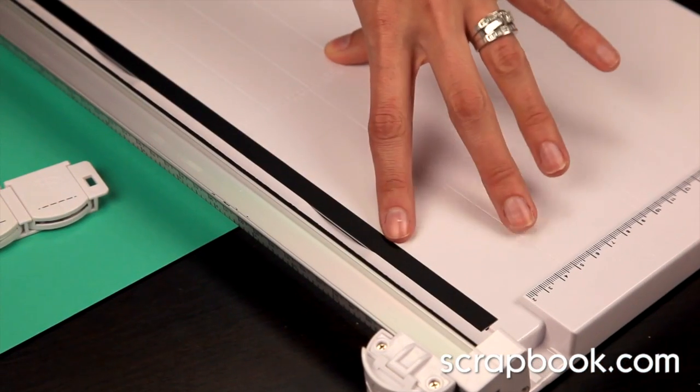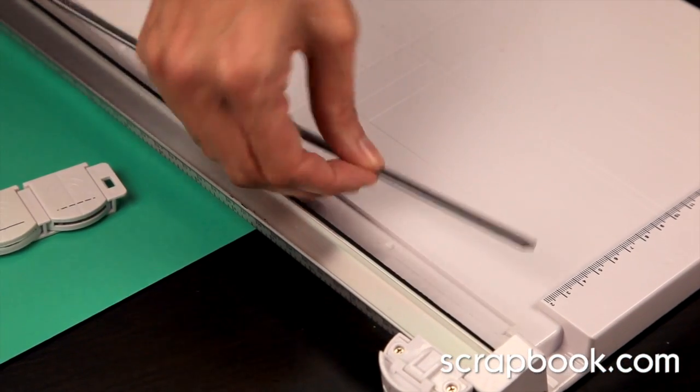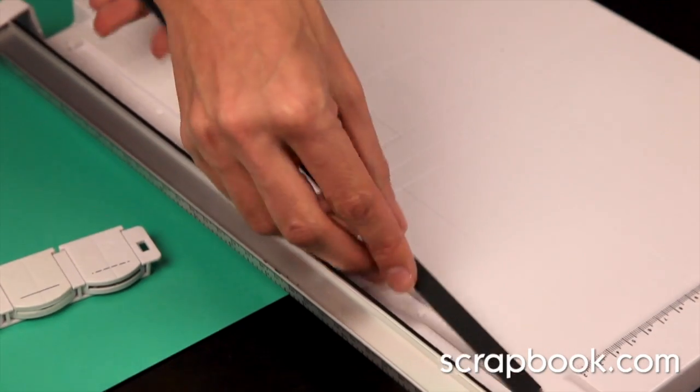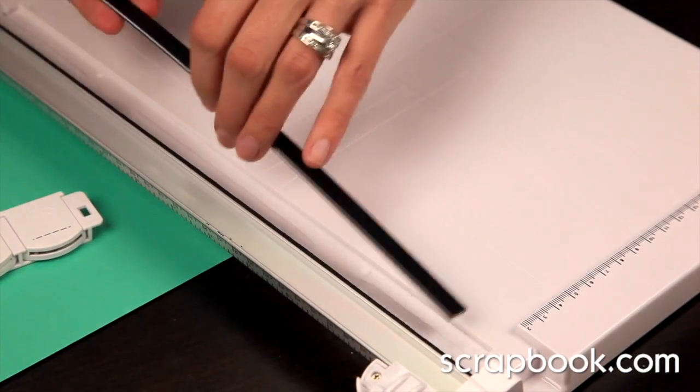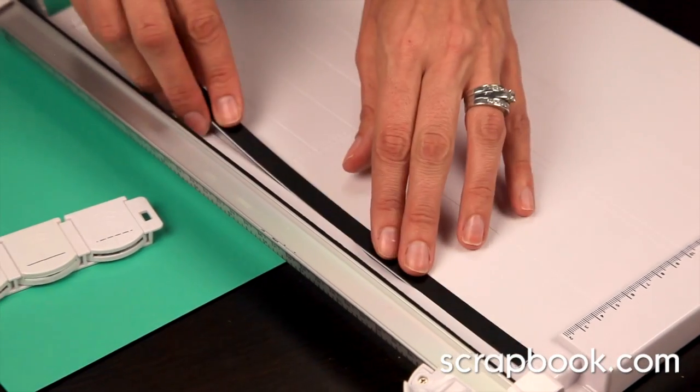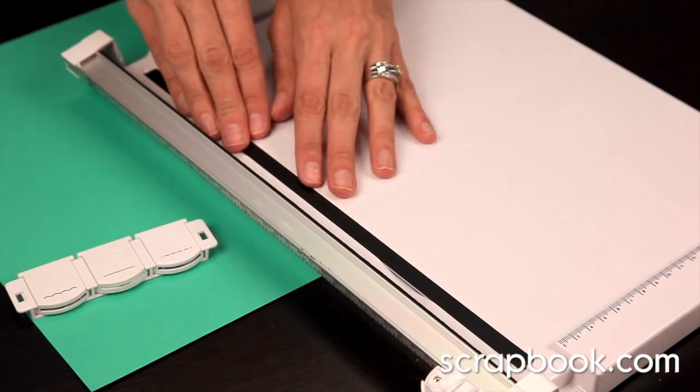The only thing that needs to be replaced is this self-healing cutting strip here, but make sure to utilize the left and the right side by turning it, as well as both sides by completely turning it over before purchasing your replacement.